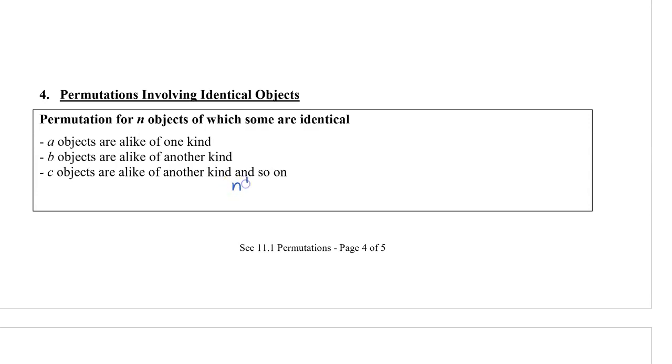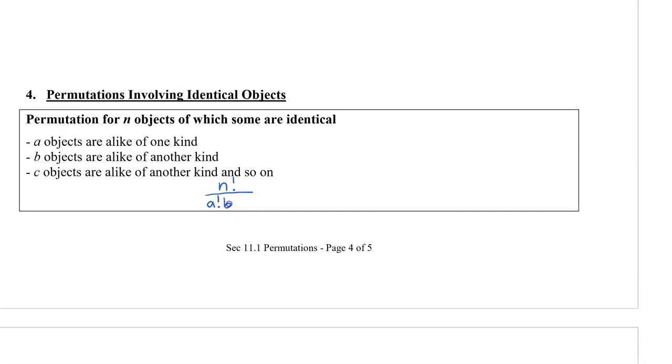We have n factorial, how many we started with, and every kind that's the same. So let's say we have A of one kind, we have to divide it by A factorial. Because of the repetition, then we're actually going to have less. And we would divide this by B factorial, and C factorial, and so on, depending if there were more items that were the same. Important to note that if you add up A plus B plus C and any other numbers on the bottom, that should equal the number that's on the top, that's being factorialed.